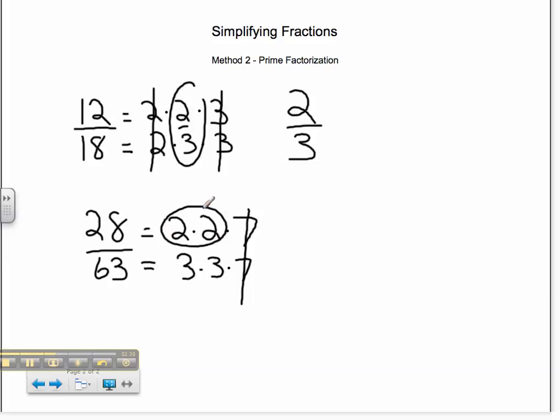So I look at the 2 times 2, that's 4. I look at the 3 times 3, that's 9. And I'm left with my fraction in simplest form, 4/9. And those are the two different ways you can simplify fractions.